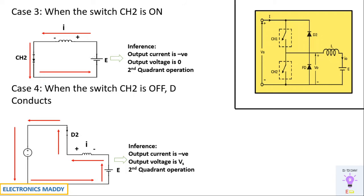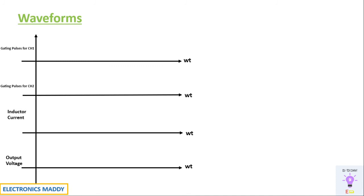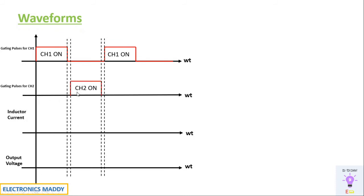Now let's analyze the waveforms from the overall cases. Considering the gating pulses for CH1: CH1 is on for a certain duration and off for a greater duration than the on time. CH2 is on when CH1 is off. When CH1 is on, current starts increasing because the inductor starts charging. Once CH1 turns off — and before CH2 turns on — it discharges through the freewheeling diode, causing the current to decrease gradually.